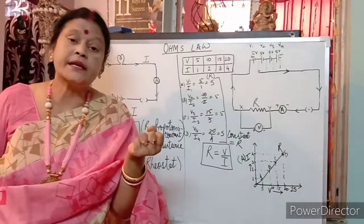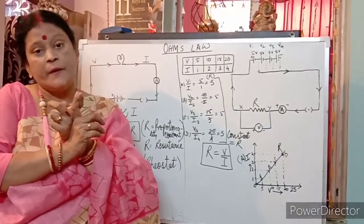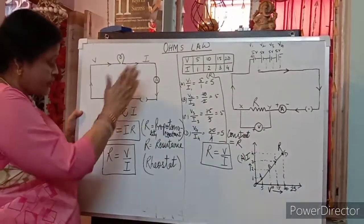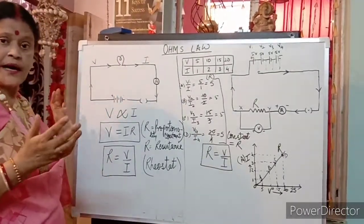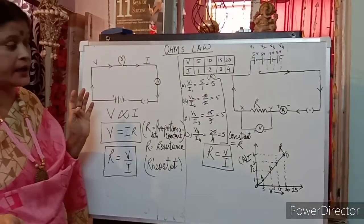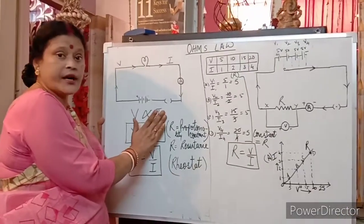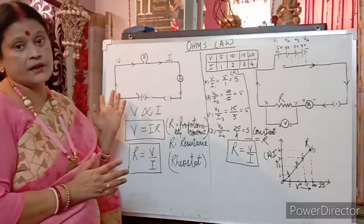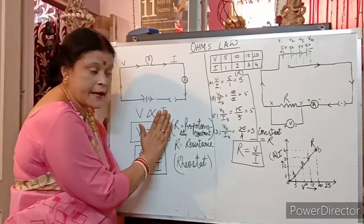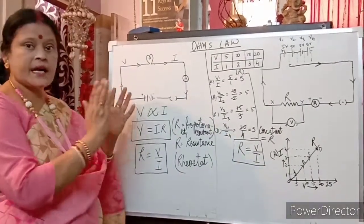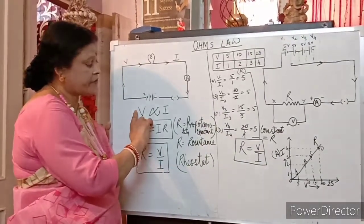What is the relationship between potential difference and current? Ohm's Law says that potential difference is directly proportional to current. Directly proportional means — if one is more, the other is also more. If your work done (potential difference) is more, then charge will flow better, so V is directly proportional to I. Inversely proportional means if one is more, the other is less.